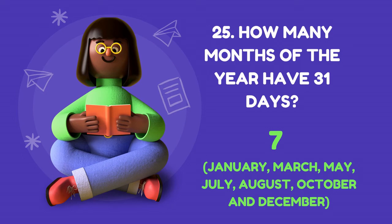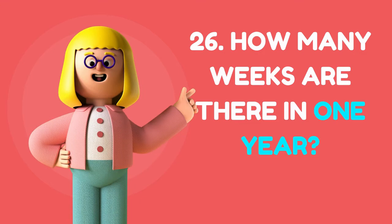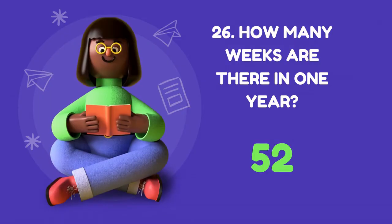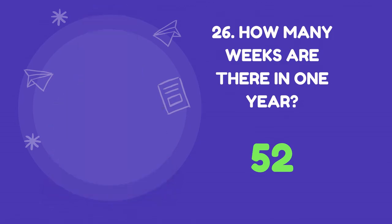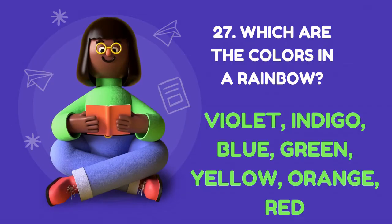The months with 31 days are: January, March, May, July, August, October, and December. How many weeks are there in one year? The answer is 52 weeks. Which are the colors in a rainbow? The answer is violet, indigo, blue, green, yellow, orange, and red.